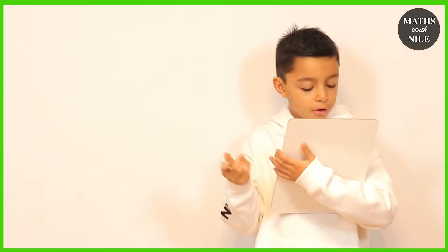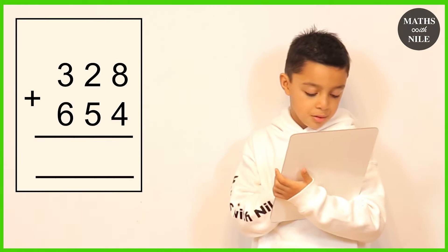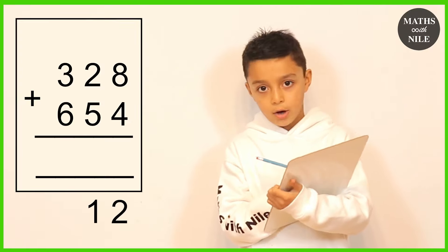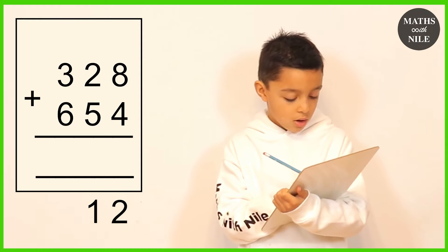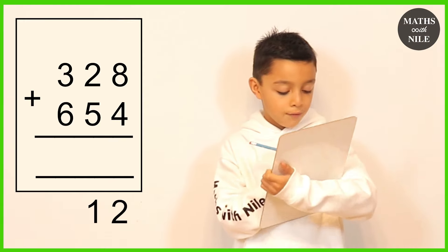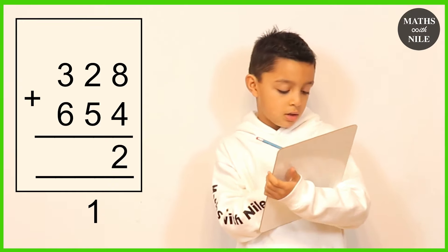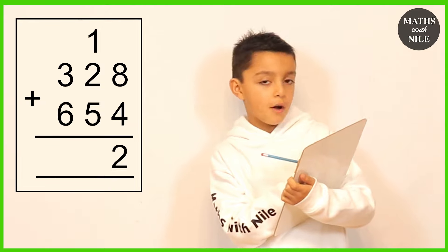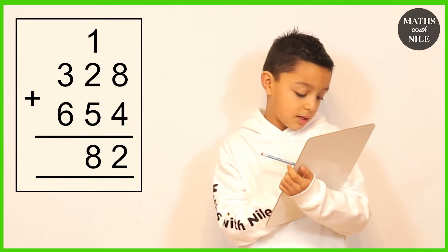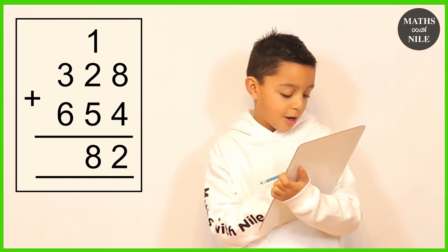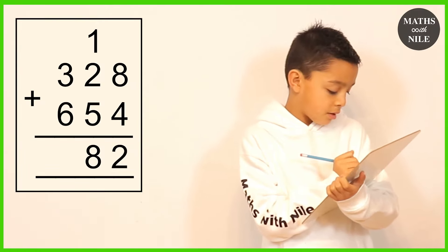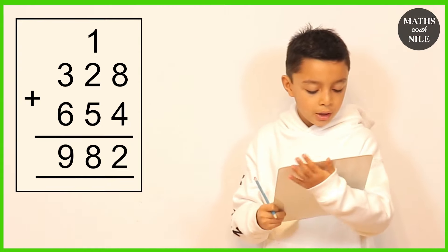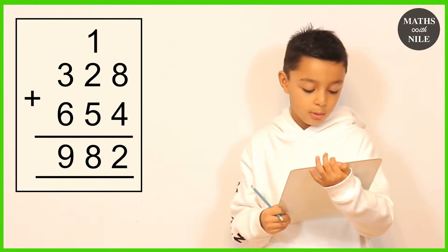Question number four is 328 plus 654. We do 8 plus 4, which is 12. We put the 2 in the units column and carry a 1. Then 1 plus 2 is 3, and 3 plus 5 is 8 — put the 8 underneath the tens column. Because we don't carry anything, we do 3 plus 6, which is 9 — put our 9 underneath the hundreds column. So 328 plus 654 equals 982.